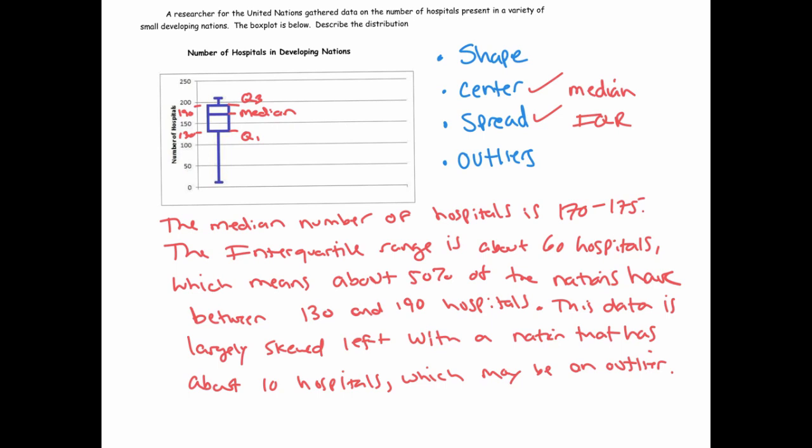I've talked about the center using the median, the spread using the interquartile range, the shape, and a potential outlier, even though we don't know.